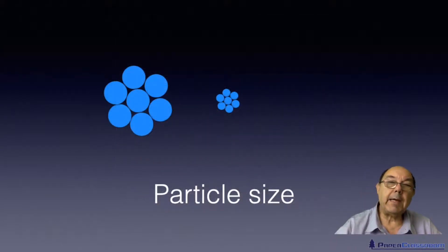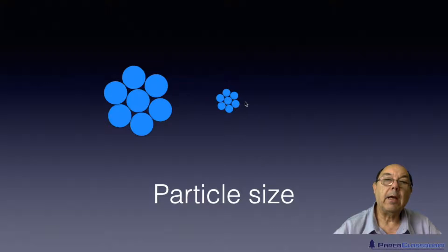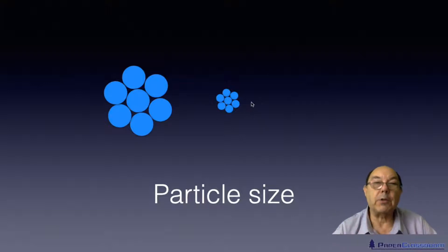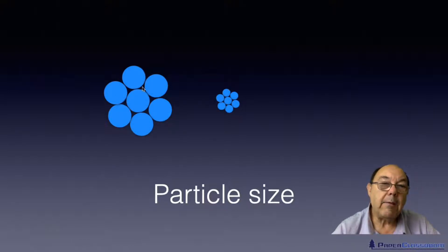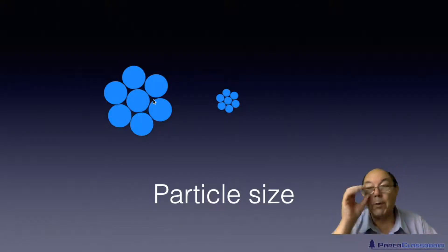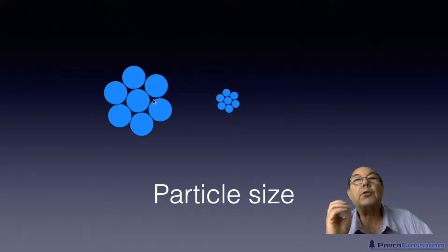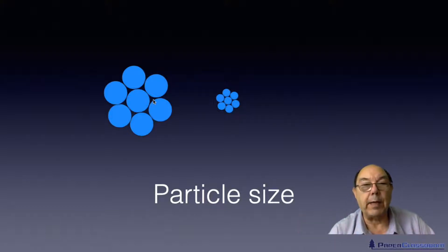Here we have two groups of particles and the only difference is the particle size. If you notice this agglomerate made of seven particles — if you look in between, there's quite a large gap — a relatively large gap — so that means that water will flow easily through there and so it's easy to dewater.